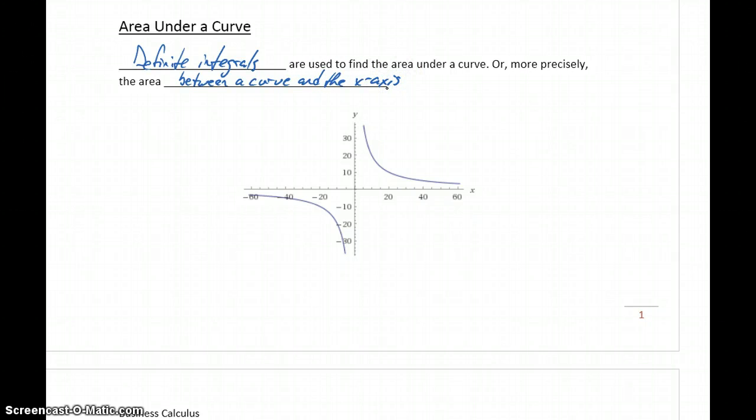So we're going to be given an upper and lower bound. So for this curve that might be from x equals 20 to x equals 40. And what we want to find is the area between that curve and the x-axis.